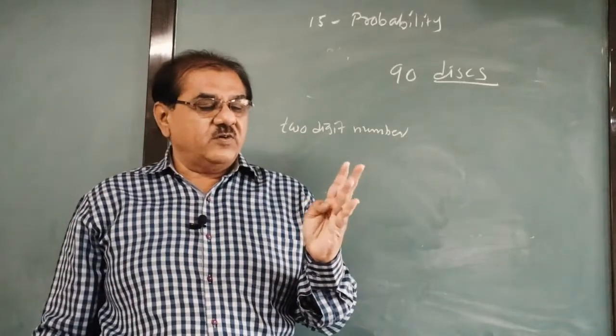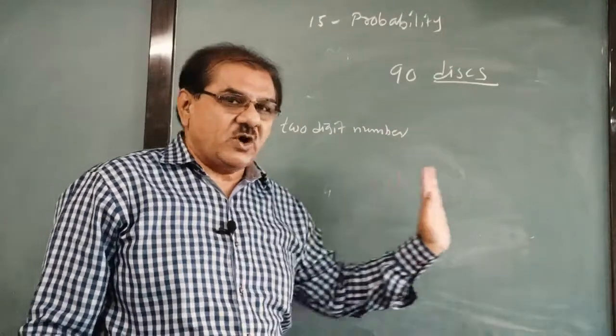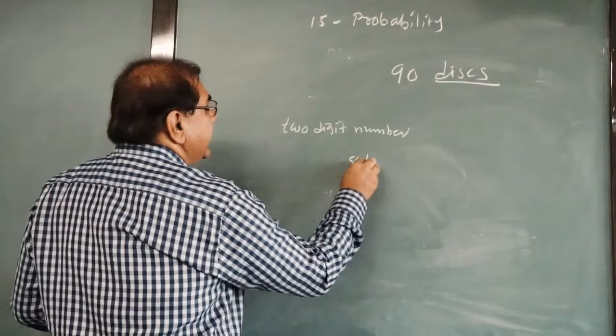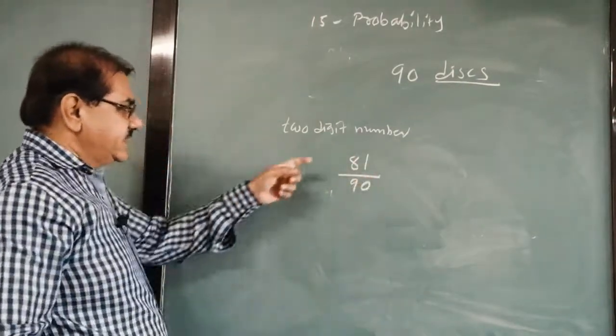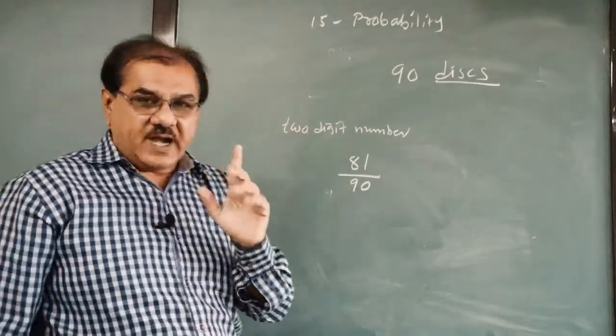How many 2 digit numbers are there from 1 to 90? So 1, 2, 3, 4, 5, 6, 7, 8, 9, 9 you exclude. So rest all are 2 digit numbers. So how many left? 9 I exclude, so 81. And total number of disc is 90. So this is how you can find out. You have to simplify the fraction, but 81 upon 90, that is your probability.